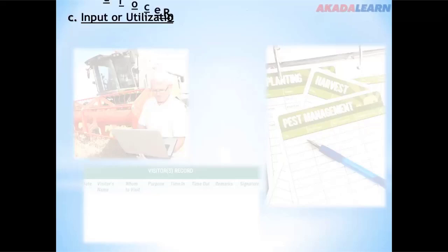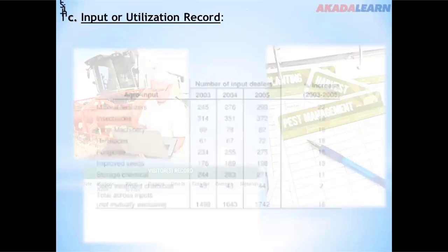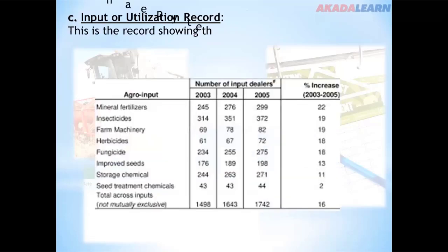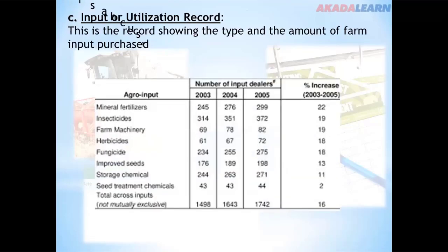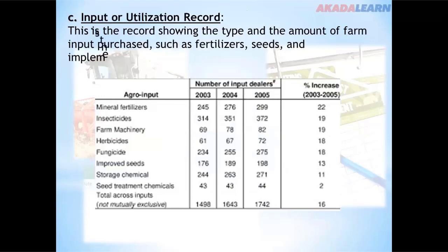We also have the input or utilization record. This is the record showing the type and amount of farm inputs purchased, such as fertilizer, seeds, and implements.